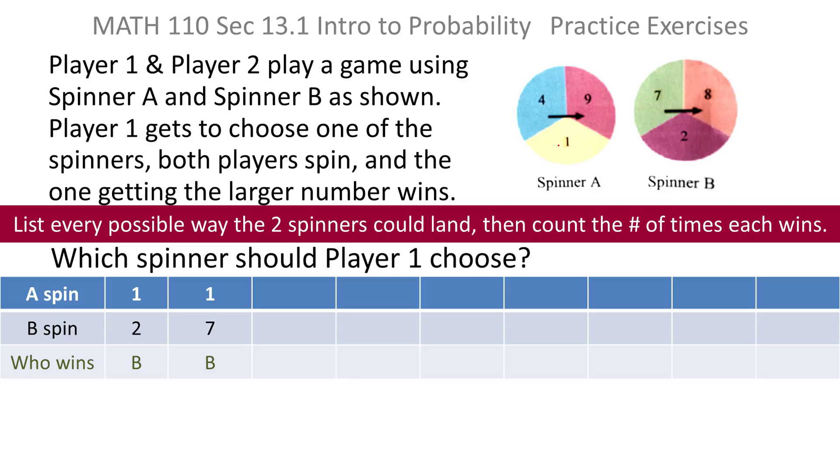If I'm going to stay with the 1 on spinner A, the only other choice I have is to match it with the 8 on spinner B. Again, 8 is larger than 1, so spinner B wins yet again. Spinner B is looking pretty good, but keep in mind, I chose the lowest number on spinner A to start with.